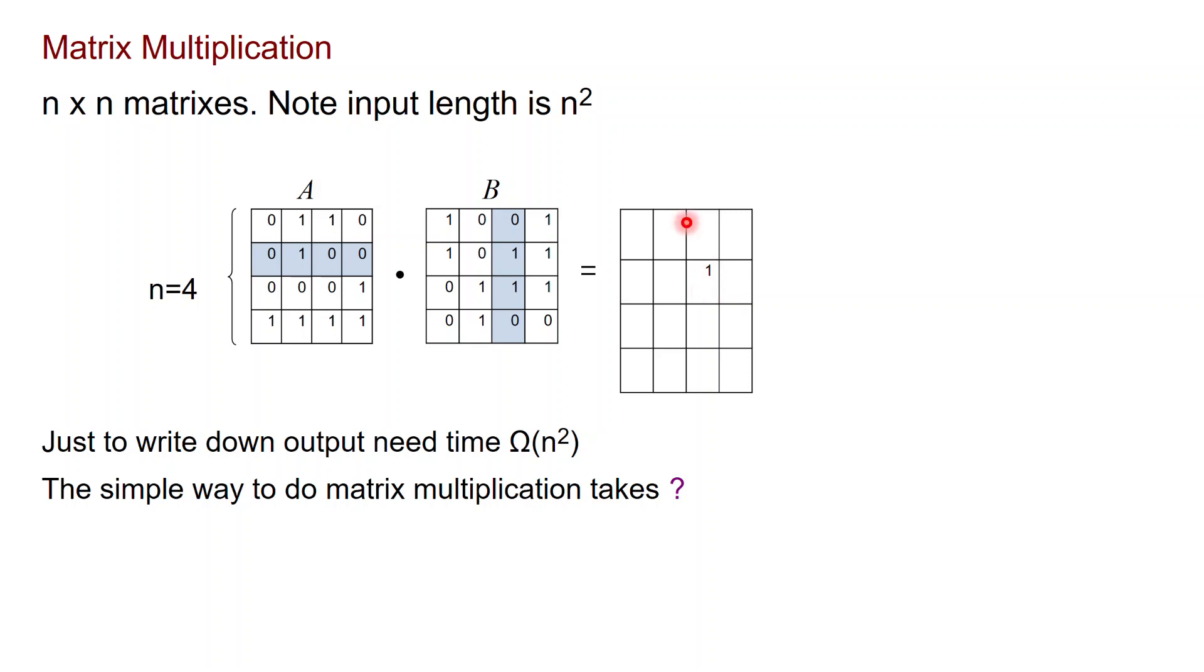So these outputs are size n squared. So you need at least n squared time just to write down this output. And the simple way to do matrix multiplication that I just described would take time n cubed, because for each of these entries I'm doing this inner product which takes time n.